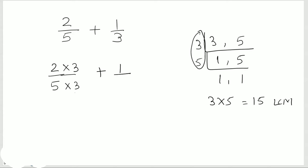Plus 1 over 3 — we multiply here by 5, because 3 times 5 is 15. So we are multiplying by 5 in the denominator as well. Whichever number you are multiplying in the denominator, the same number has to be multiplied by the numerator.